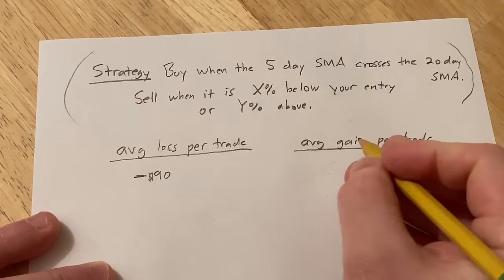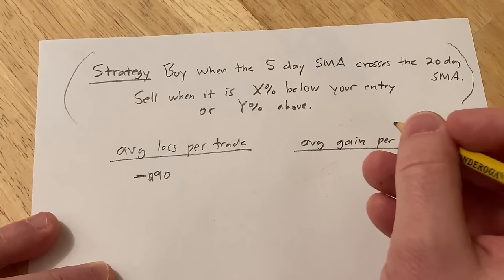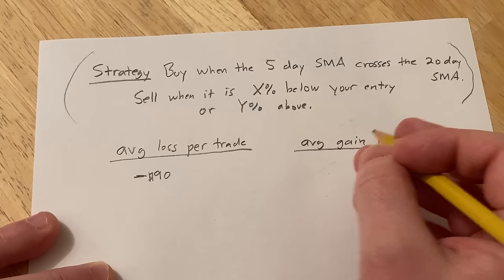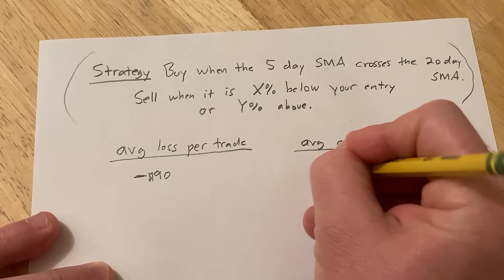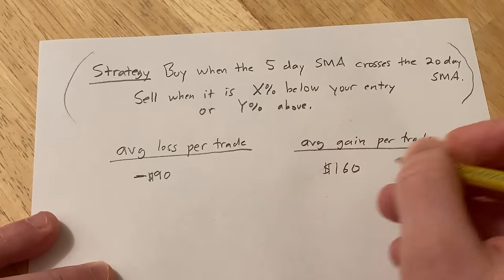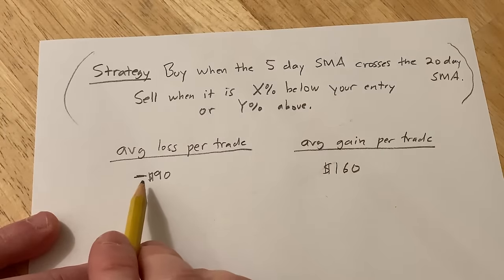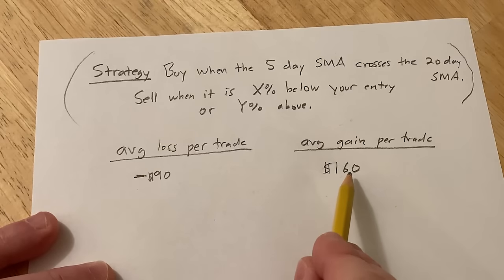On average, you lose $90. And your average gain, let's say, is $160. So on average per trade, you're losing $90, and on average per trade, you're gaining $160.